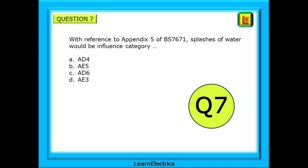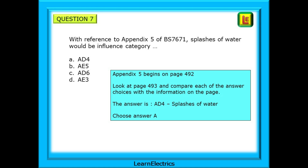Question 7: with reference to Appendix 5 of BS 7671, splashes of water would be influence category what? The question tells you which appendix to look in. Appendix 5 begins on page 492; find it and then look at page 493 and compare each of the answer choices with the information on the page. The answer is AD4 — splashes of water — and our choice should be answer A.